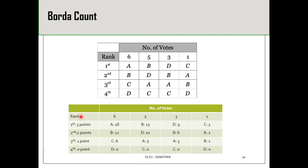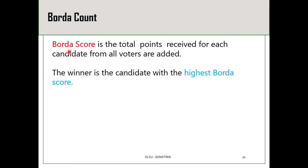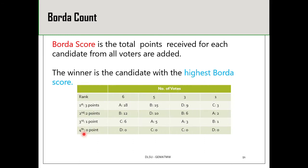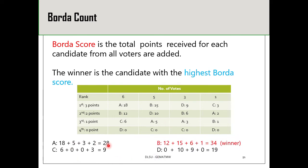We compute the total points for each candidate. For example, first place votes give 3 points, so times 6 voters gives 18; second place gives 2 points, times 6 gives 12, and so on. The Borda score is the total points received by each candidate from all voters combined. The winner is the candidate with the highest Borda score. Tallying the totals: A got 28, B got 34, C got 9, and D got 29. Candidate B has the highest Borda score and is therefore the winner by the Borda count method.